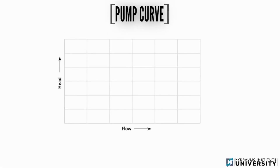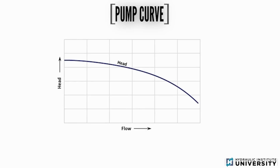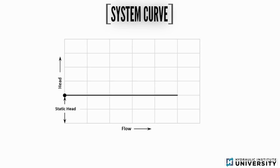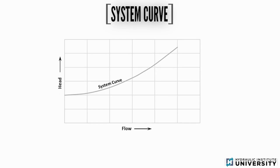A pump's hydraulic performance is graphically represented by pump performance curves. The pump head versus flow curve in particular is a valuable tool for understanding the pump's performance characteristics. The system curve is a graphical representation of head versus flow requirements of the system. It includes static head, which is not affected by flow rate, and increasing frictional head losses within the pump system at different flow rates.